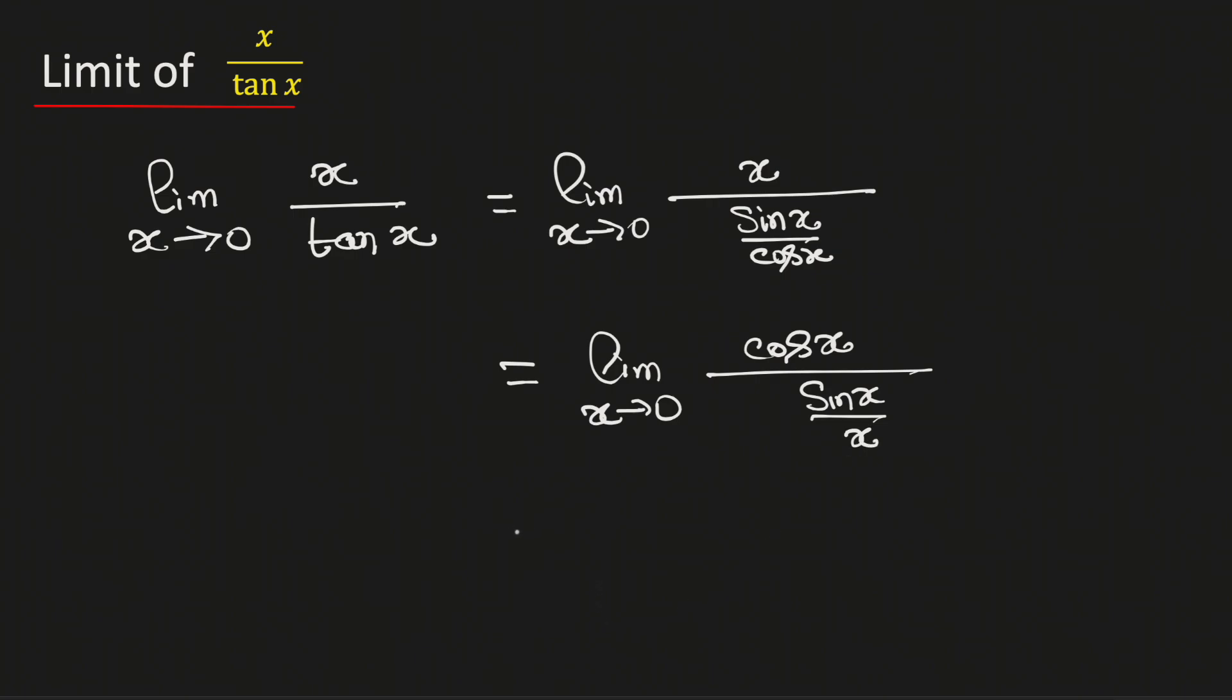Now, using the cosine rule of limits, this can be equal to limit x tends to 0 of cos x divided by limit x tends to 0 sin x by x.